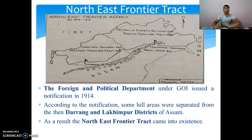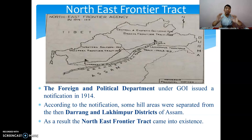Following these events, the British government established a loose kind of administration — not total or full — over these hill and tribal areas, under the Foreign and Political Department of the Government of India. A notification mentioned that certain hill areas of Darrang and Lakhimpur districts of Assam would be separated and named the North East Frontier Tract.